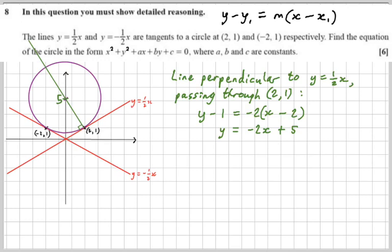What else do we need to write down the equation of a circle? Well, we need the radius, don't we? Well, we've got a radius drawn on here. Look, the radius is there. I'm going to label it, and that radius is the distance from point 0, 5 to the point 2, 1.